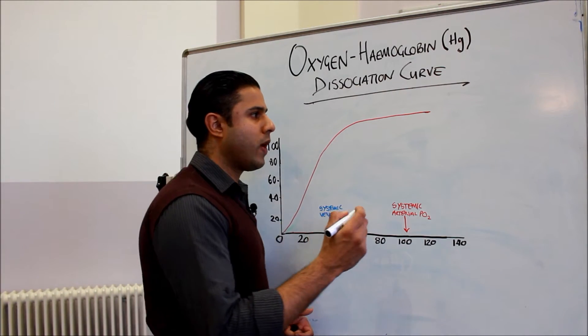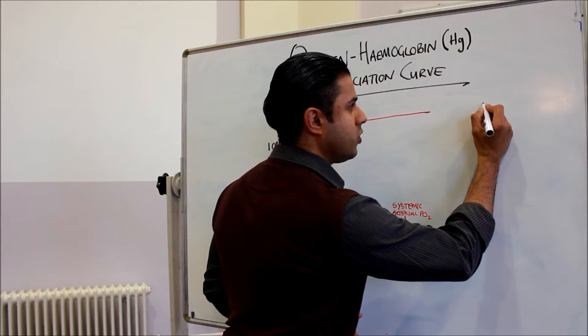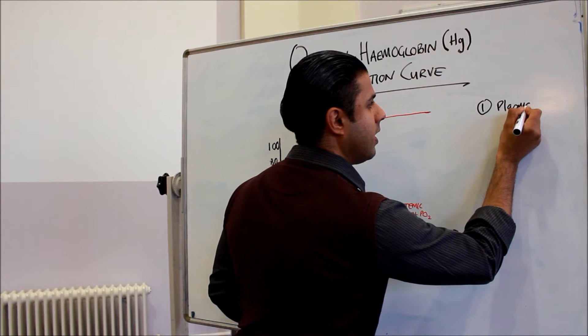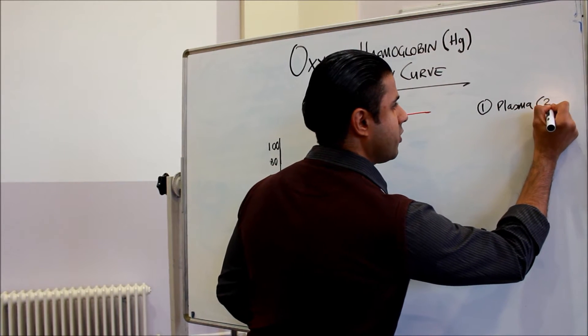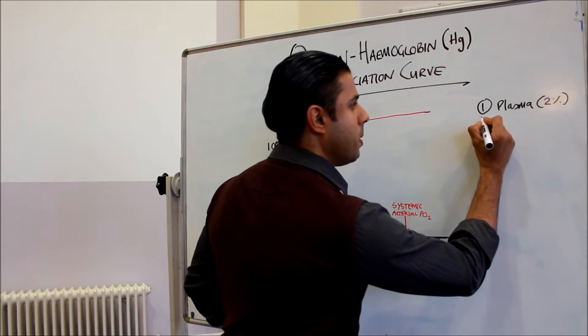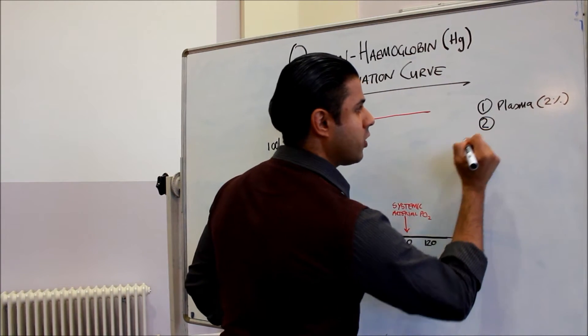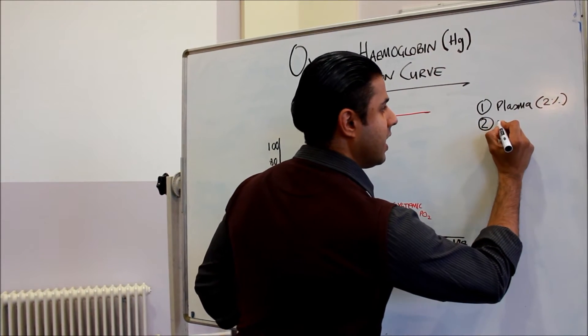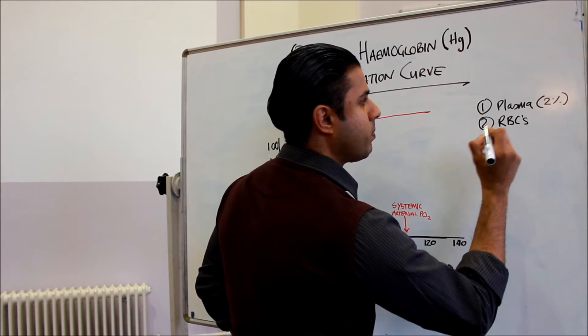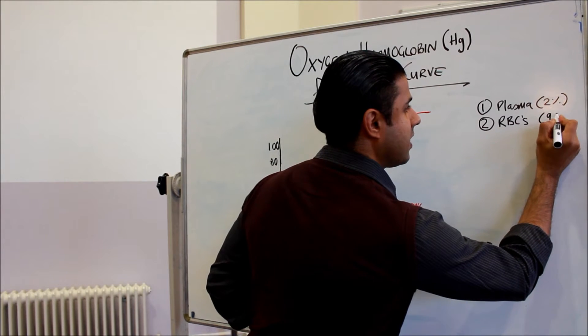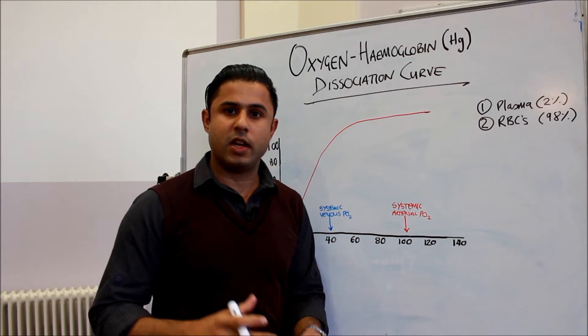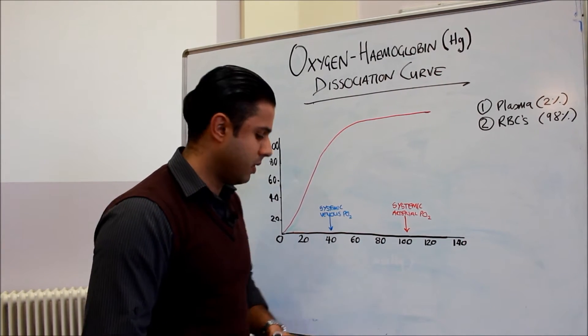There are two main ways in which oxygen is transported to the tissues. One is in the plasma, and this approximates to about 2% of the oxygen transported in this way. But by far the greatest amount of oxygen is transported in our red blood cells, which I'm going to abbreviate as RBCs. Red blood cells—and 98% of our oxygen is transported in red blood cells contained within our blood.